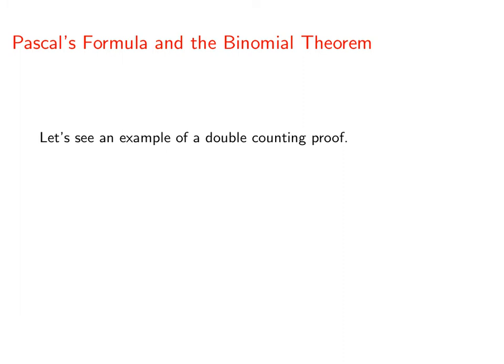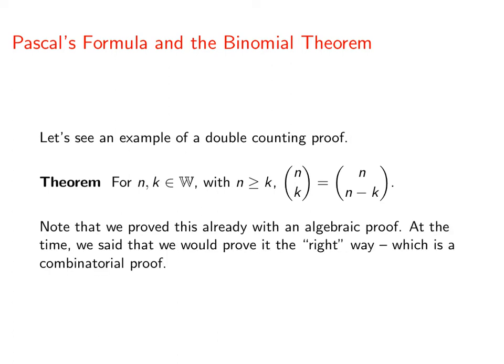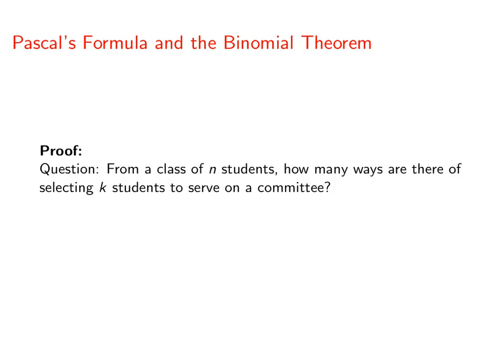Let's see an example of a double counting proof. You'll remember this — the left-right symmetry of Pascal's triangle: for any n and k in the whole numbers with n greater than or equal to k, n choose k equals n choose n minus k. We proved it before using our formula for binomial coefficients. That proof was algebraic, but we're now going to do this in an entirely different way — the combinatorial proof, which I'd say is the right way.